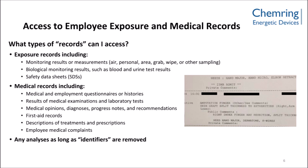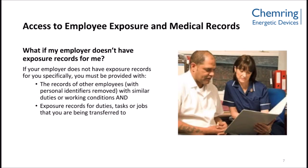It is important to note that whenever access is requested to any type of analysis, personal identifiers must be removed. Furthermore, if your employer doesn't have exposure records available to provide you with, your employer must provide you with records of other employees with similar duties or working conditions, and exposure records for duties, tasks, or jobs that you are being transferred to. Remember, personal identifiers must be removed, whether they be direct — like name, address, or social security — or indirect, such as exact age, height, sex, job title, etc.